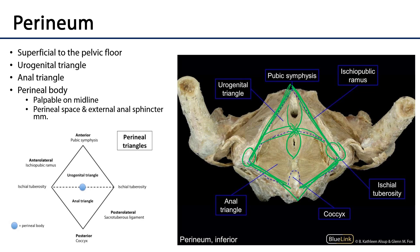The perineal body is not a constant structure, but it is a fairly typical palpable structure through the skin, and it is important in maintaining the integrity and actions of these muscles. Vaginal delivery — either through injury or through purposeful incision such as an episiotomy — may endanger this structure, and that can lead to anal or rectal tearing.